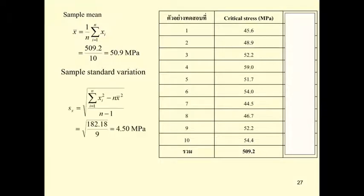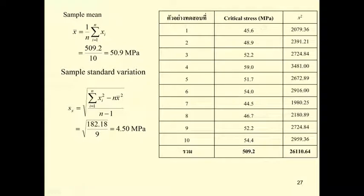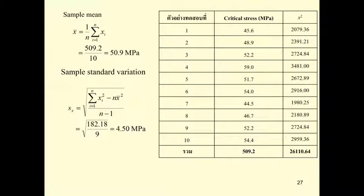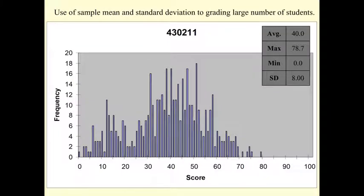For the sample standard deviation, you square each term and sum all 10 squared values to get 26,110.64. Then you subtract 10 times 50.9 squared, giving 182.18. Divide by 10 minus 1, which is 9, and take the square root to get a sample standard deviation of 4.5. For the coefficient of variation, divide the sample standard deviation by the mean to get 0.0884, or 8.84%. That's a very simple calculation.